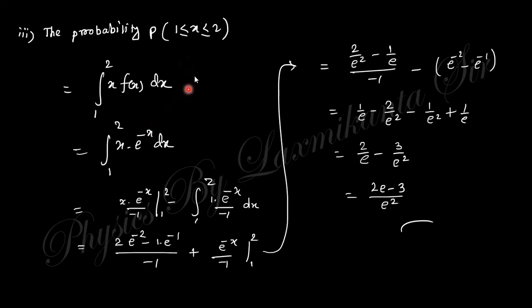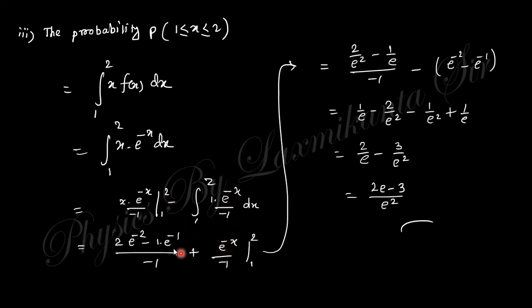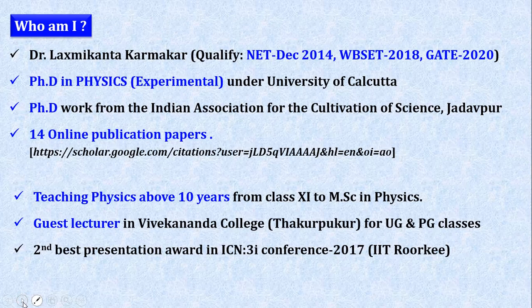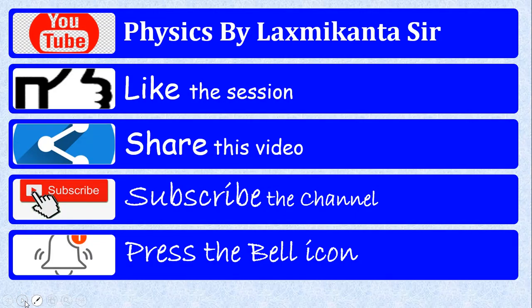For the probability from 1 to 2, integrate the density function from 1 to 2. Since the total integral is 1, you just compute ∫₁² e^(−x) dx. Using integration by parts: applying x·e^(−x) with the formula, putting in the limits, you obtain the final numerical value. This concludes the video — contact details and the YouTube channel are provided. See you in the next video, thank you.